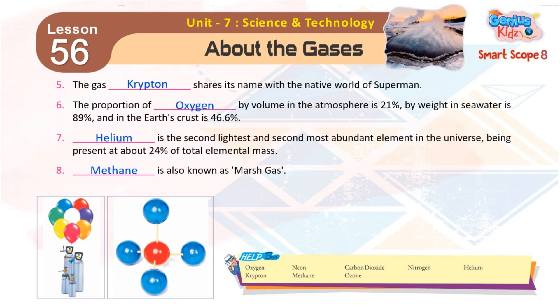7. Helium is the second lightest and second most abundant element in the universe, being present at about 24% of total elemental mass. 8. Methane is also known as marsh gas.